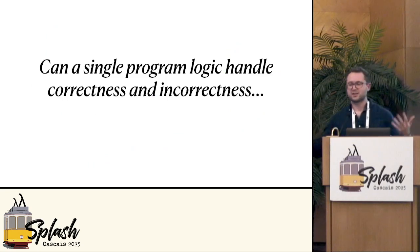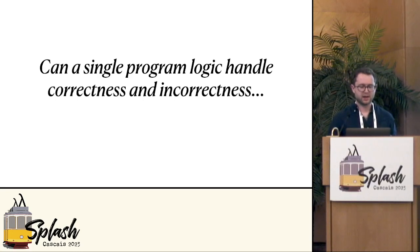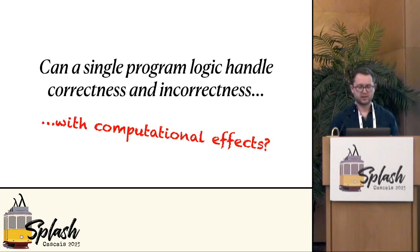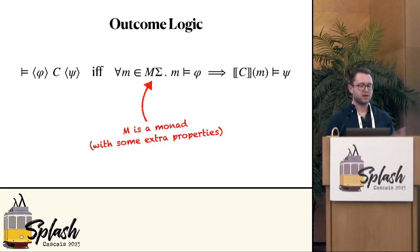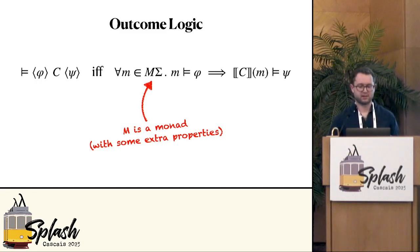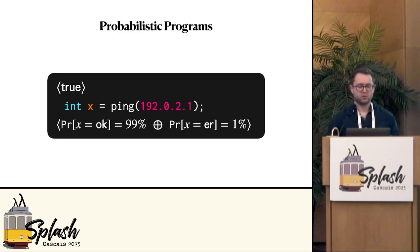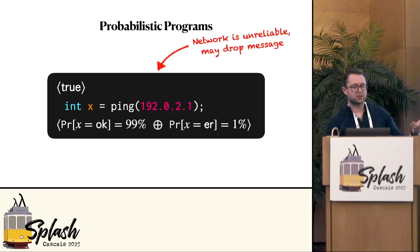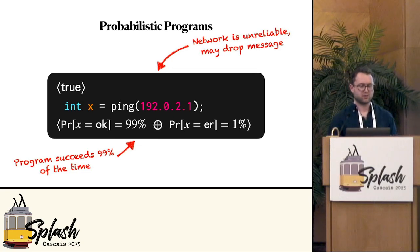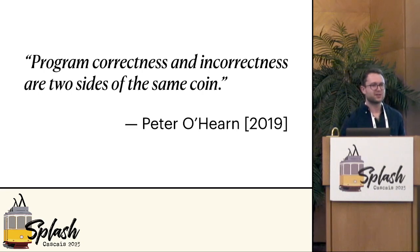I started by asking whether a single program logic can handle correctness and incorrectness — let's up the stakes and ask whether we can handle correctness and incorrectness with effects. In the paper, the actual formalism is parametric on some monad, so you can instantiate this logic with a variety of different types of effects. One such effect is for probabilistic programs: maybe you don't just want to know if a bug is reachable, but want to quantify how likely it is. For example, in a distributed program communicating over an unreliable network that may drop messages, you want to bound how likely an error is — and in this case we can say the program will succeed with probability 99%.